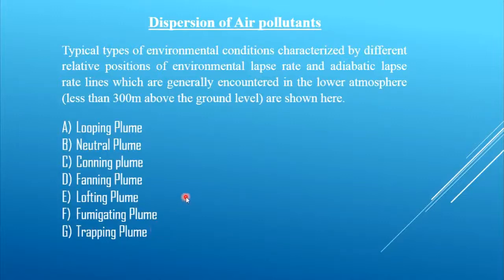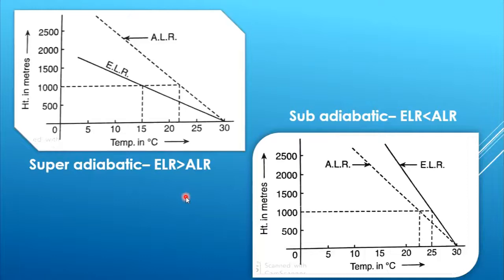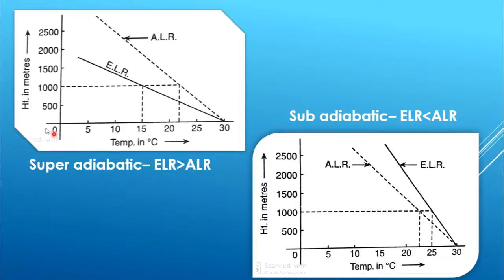Before discussing the plume patterns, we need to know the environmental conditions. Environmental conditions can be two types: superadiabatic condition and subadiabatic condition, depending on the ELR and ALR positions. For superadiabatic condition, ELR is greater than ALR. In this case the ELR line lies below the ALR line. In the graph, the y-axis shows height in meters or altitude. At 1000 meters height, the environment temperature is 15 degrees centigrade.